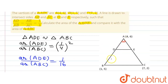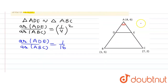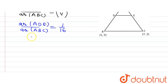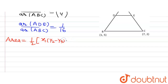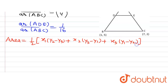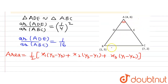We know that when the coordinates of the vertices of a triangle are given as (x1,y1), (x2,y2), and (x3,y3), the area of the triangle is: half of |x1(y2 − y3) + x2(y3 − y1) + x3(y1 − y2)|. Assuming A(4,6) is (x1,y1), B(1,5) is (x2,y2), and C(7,2) is (x3,y3).